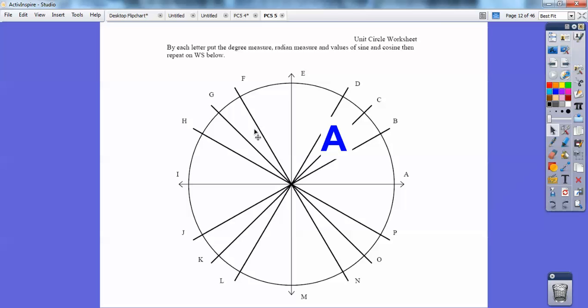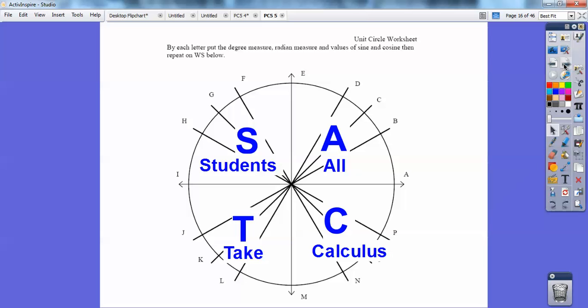Over here, what's positive? Just the sine is positive over there, and just the tangent's positive there, and just the cosine's positive there. So what I tell my kids to remember this is all students take calculus. A stands for all, S stands for sine, T stands for tangent and cotangent, and just the cosine's positive in quadrant 4 right there.